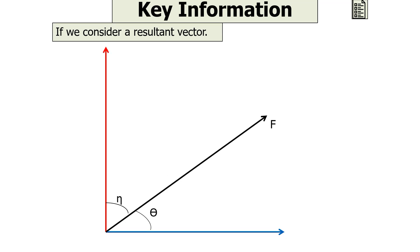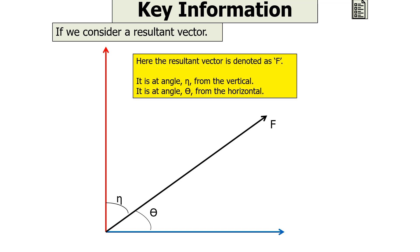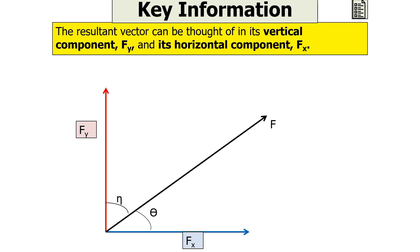If we consider a resultant vector denoted as F, and it's at an angle phi from the vertical and an angle theta from the horizontal, we can say that the resultant vector has a vertical component Fy and a horizontal component Fx. We can then say F squared is equal to Fy squared plus Fx squared.